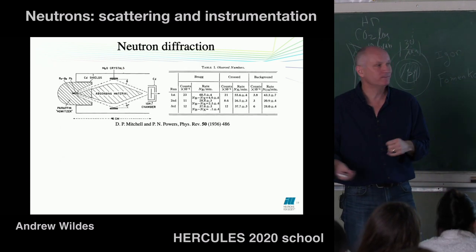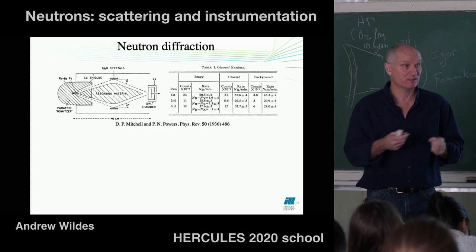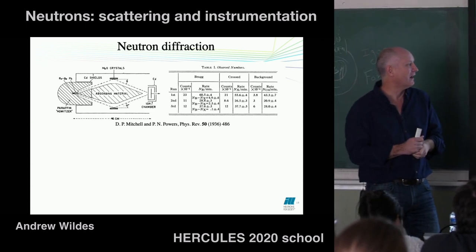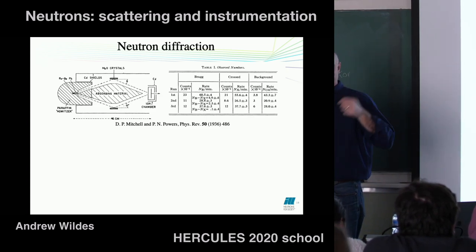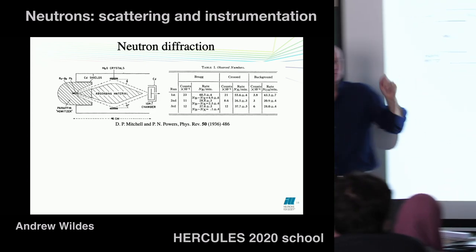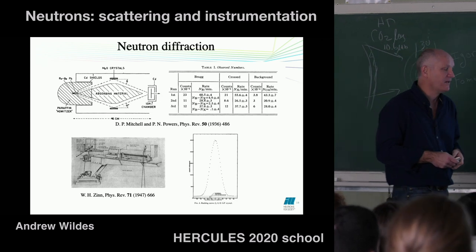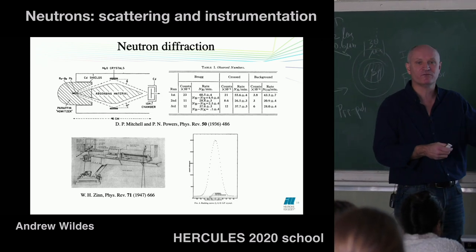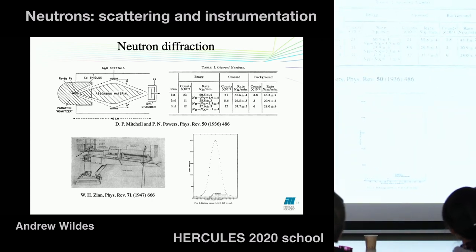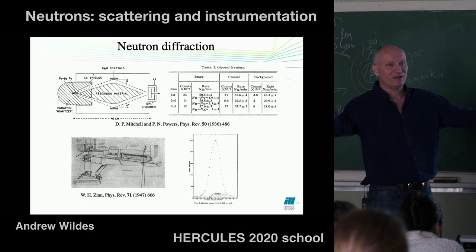The first neutron diffraction experiments were done back in 1936 — not long after Chadwick's 1932 paper. An early setup used a 'paraffin howitzer' to generate neutrons, diffracting them off two crystals into a detector. About 11 years later, a much more comprehensive experiment demonstrated the rocking curve approach — rotating the sample and looking for a Bragg peak — and you can see a nice Bragg peak in those results. From around the 1950s, neutron scattering — diffraction and inelastic scattering — really flourished, leading to facilities like the ILL today.